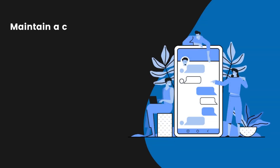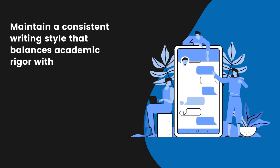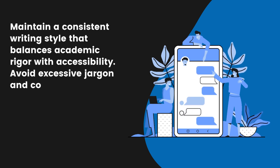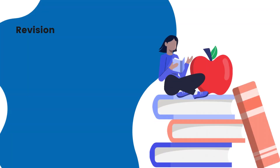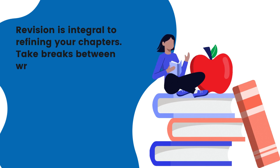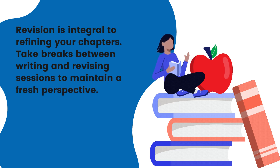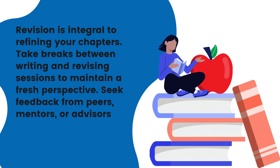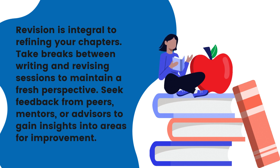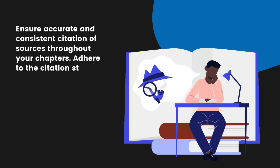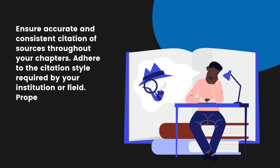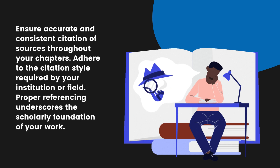Style and Clarity: Maintain a consistent writing style that balances academic rigor with accessibility. Avoid excessive jargon and complex sentence structures, and clearly define technical terms and concepts when introduced. Revision and Peer Feedback: Revision is integral to refining your chapters. Take breaks between writing and revising sessions to maintain a fresh perspective, and seek feedback from peers, mentors, or advisors to gain insights into areas for improvement. Citation and Referencing: Ensure accurate and consistent citation of sources throughout your chapters, adhering to the citation style required by your institution or field. Proper referencing underscores the scholarly foundation of your work.